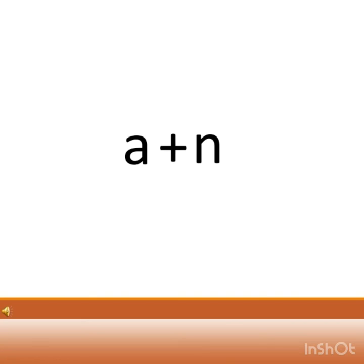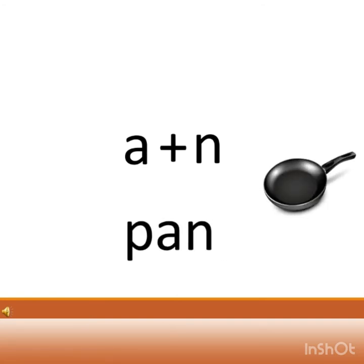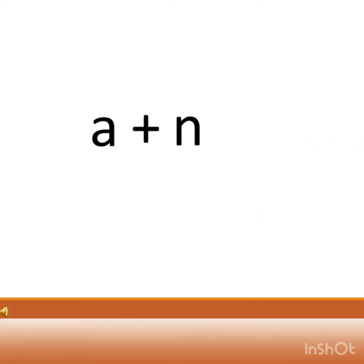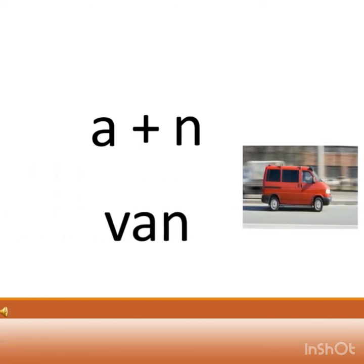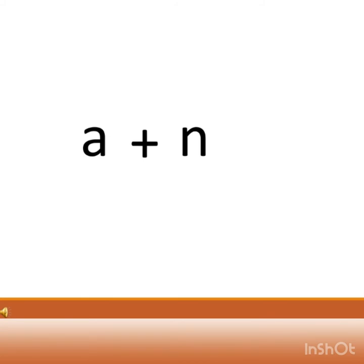A says 'a', N says 'n' — when they are together, what do they say? 'An'. And the word is P-AN: pan. Moving to the next word: A says 'a', N says 'n', when they are written together what sound do they make? 'An'. And the word is B-AN: ban.